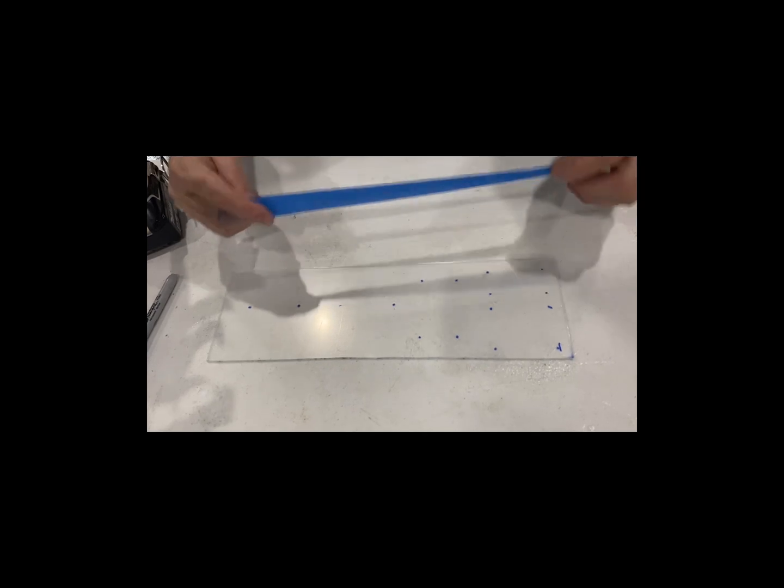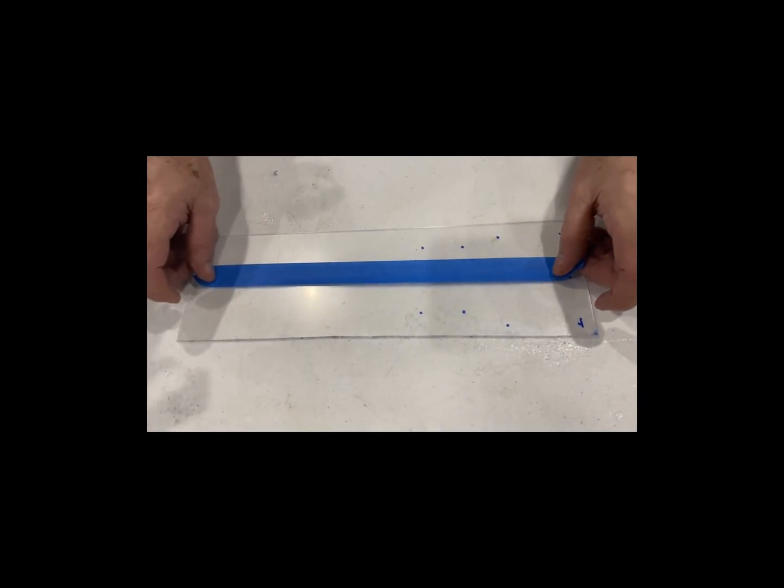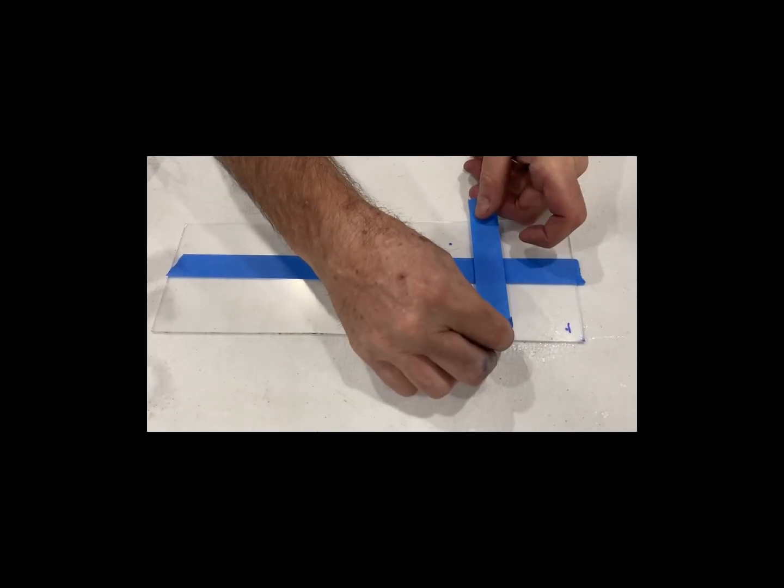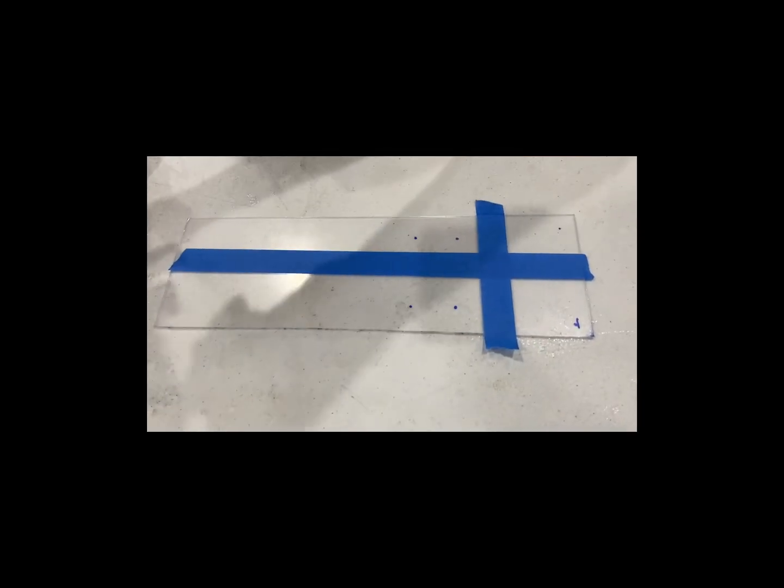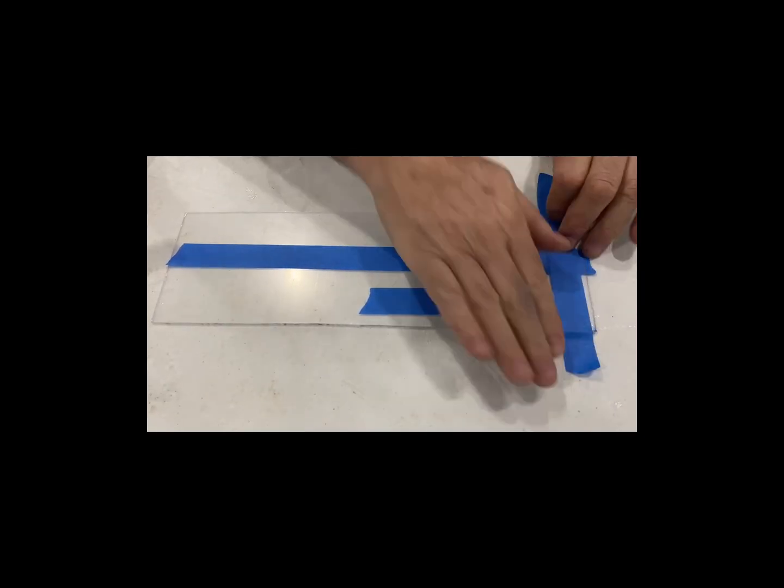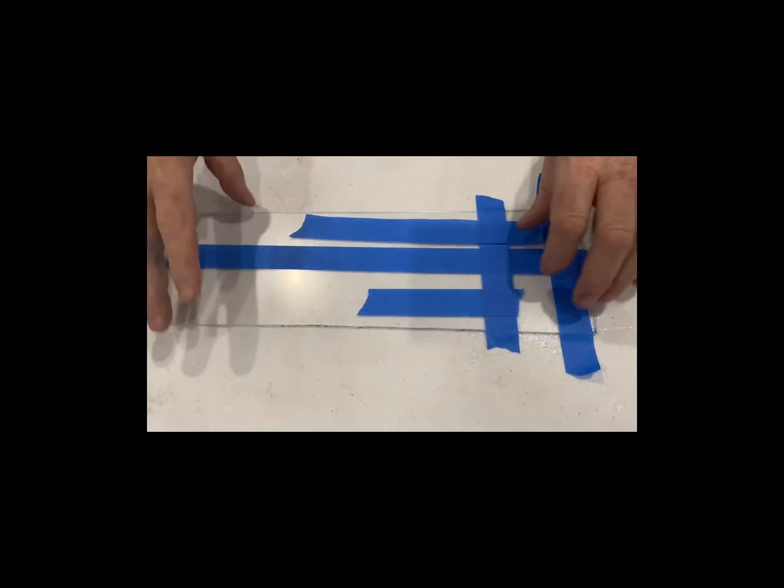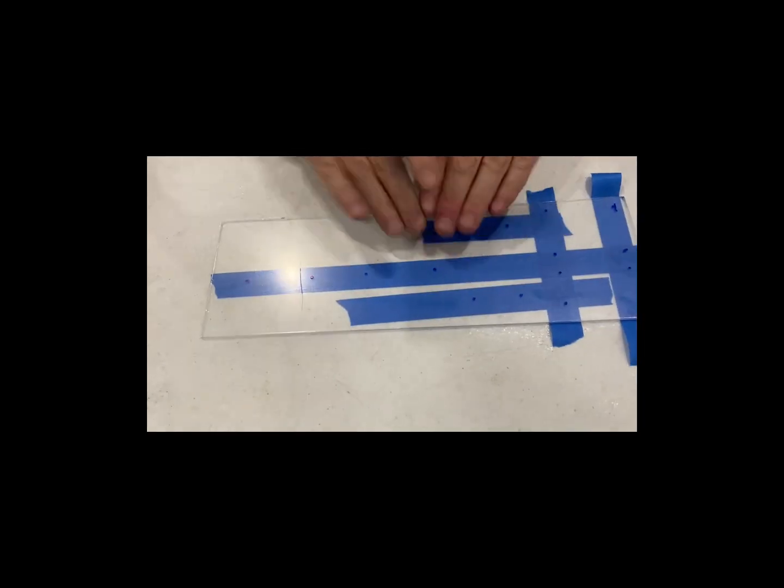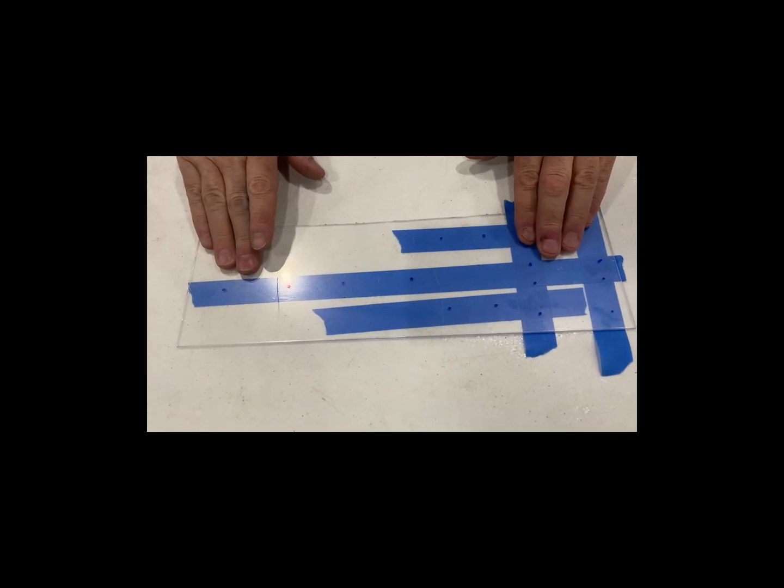I'm going to put some blue tape on the back side just to make sure when we drill that we don't shatter the PVC or cause any problems. This will help it not to chip or cause any issues. Well, you're going to remove this in a minute, but literally you can still see the dots. So it's not a big deal.